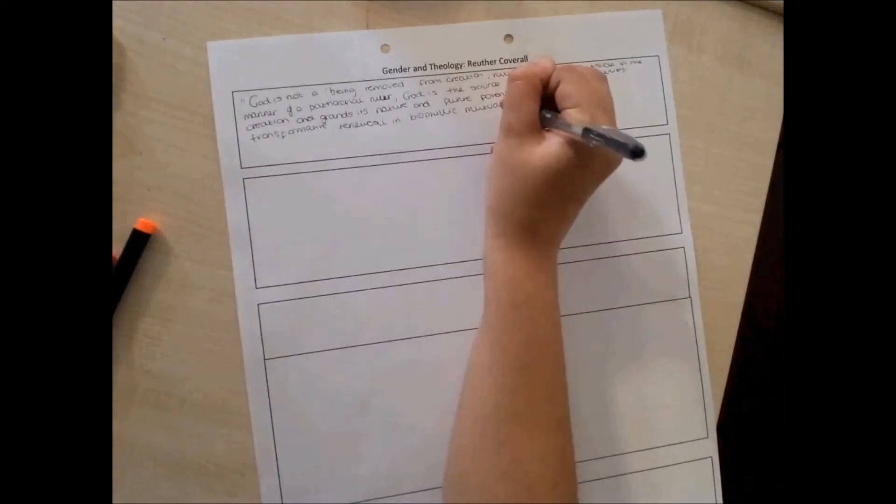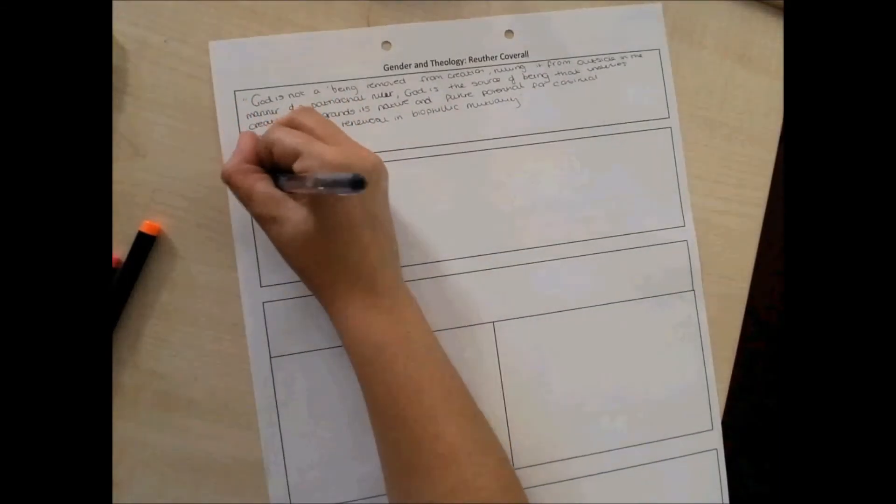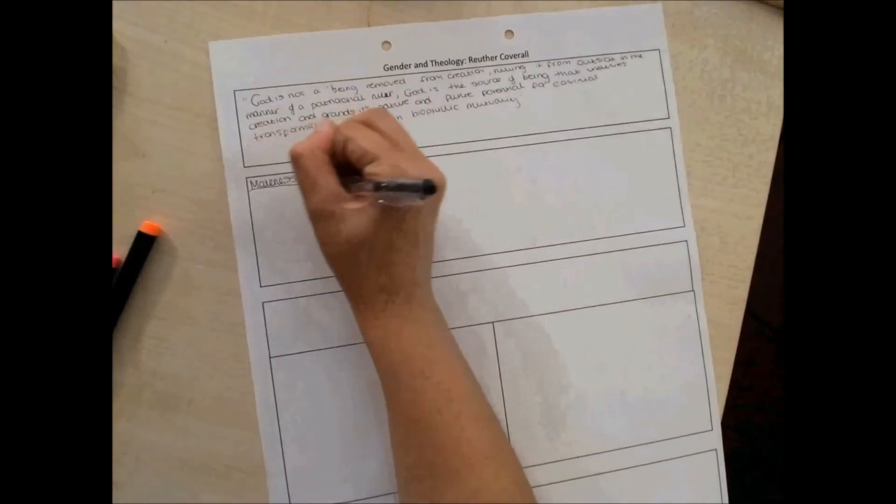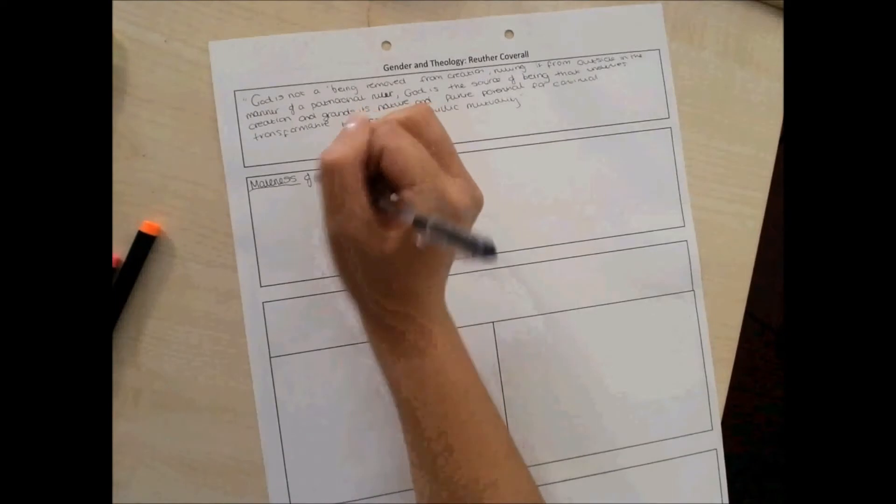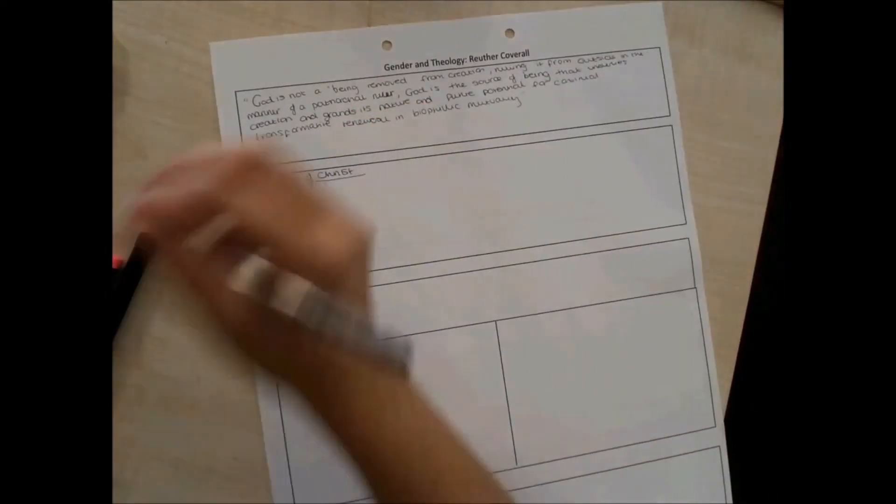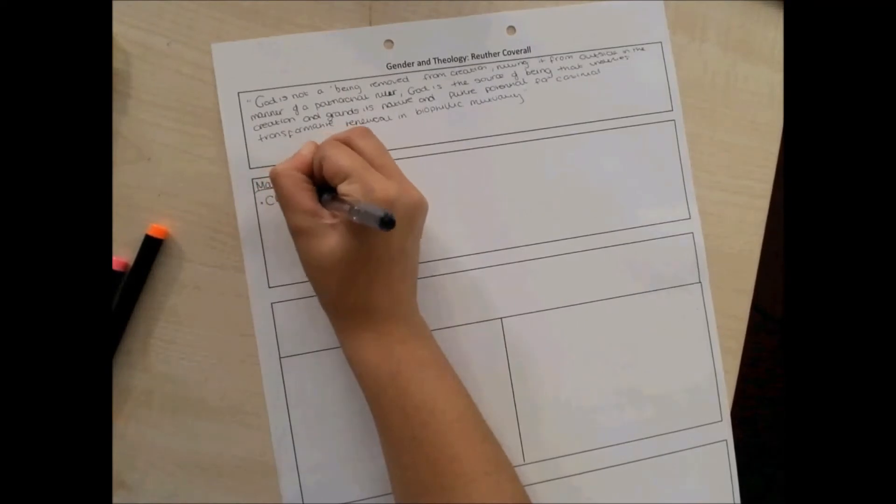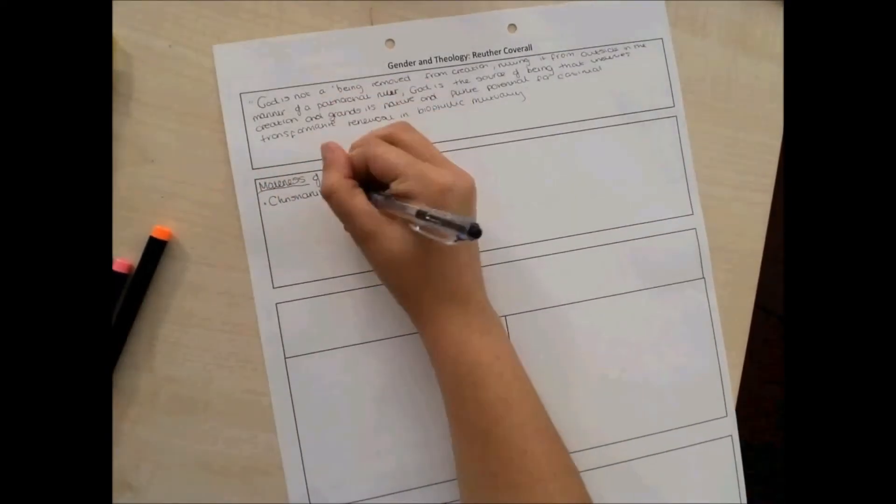All right, box underneath then. This sheet, by the way, is nicely spread out because obviously I could have made this into just one side, but because we've had the two sides, I might as well use them and spread it out. The maleness of Christ goes into that second main box. Ruther argues that Christianity has become distorted by patriarchal tradition and is in need of a reform. Reform means a change. It needs a change.